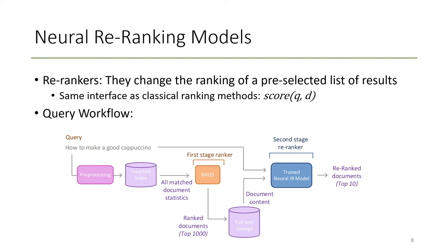After each pair is scored, you just sort the pairs by the returned score to, for example, take the top 10 documents out of the pool of 1000 and present only those top 10 documents to the user.